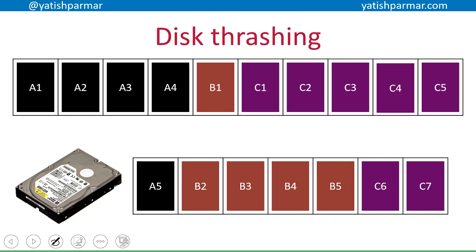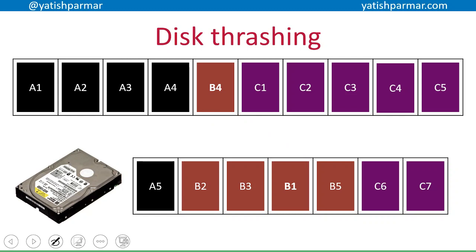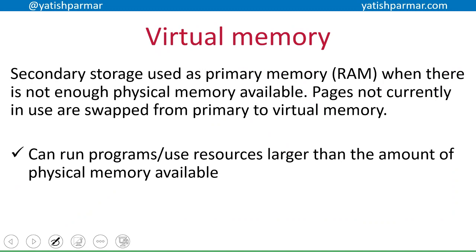Disk thrashing occurs when, for example, B1 has a call to B4 so B4 needs to be loaded into RAM, but then B4 has a call to B1. These pages start calling each other in a loop, being swapped backwards and forwards between RAM and virtual memory. This can cause disk thrashing and damage the disk. To summarize: we use secondary storage as primary memory when there isn't enough physical memory, and pages not currently used are swapped from primary memory into virtual memory.